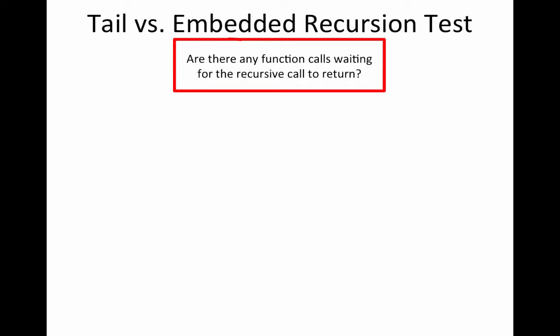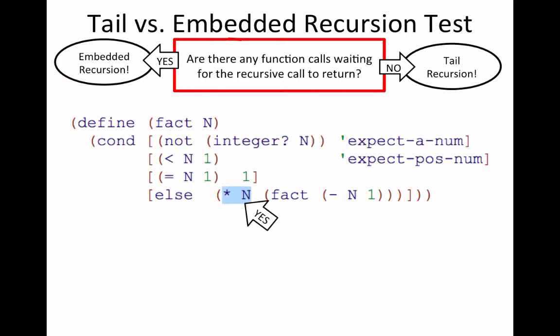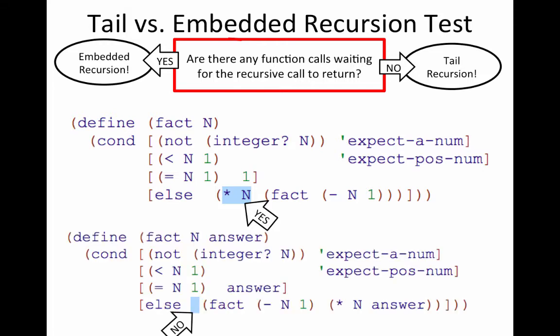The key thing is: for tail recursion versus embedded recursion, are there any function calls waiting for the recursive call to return? If yes, it's embedded recursion. If no, it's tail recursion. In our original version of factorial, we were waiting for fact to return because we needed to multiply the answer by n. In this new version with tail recursion, nothing was waiting for fact to return. So once we delegated to the next recursive call, we weren't necessary anymore — there was no additional calculation that we needed to do.